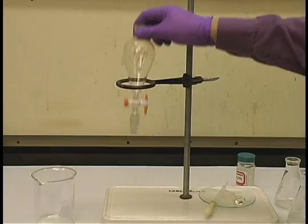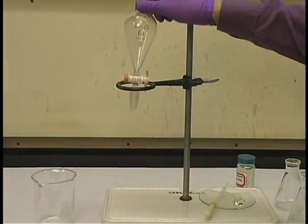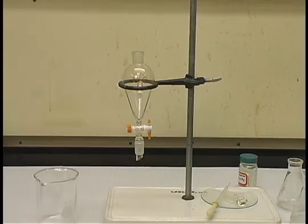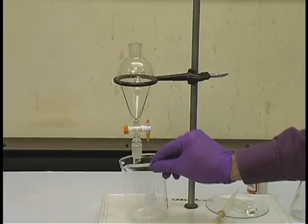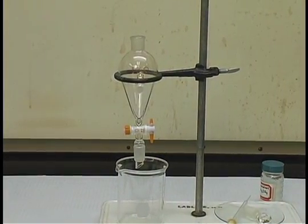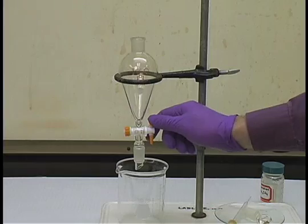In a liquid-liquid extraction using a separatory funnel, you first place the funnel in a ring stand, and then underneath the funnel, you place a beaker. This beaker serves as a catch basin in the event that you leave the stopcock open.